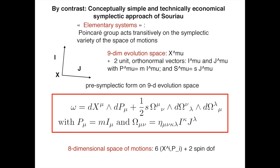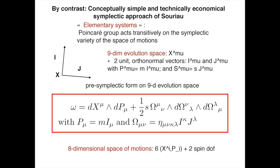It starts, before going to the space of motions, with the evolution space, which includes in the ordinary sense time lines. You have a nine-dimensional evolution space, which is minimal: four spacetime coordinates x, and then at each point in spacetime just two orthonormal vectors — i, which will be a unit vector proportional to the momentum, and j, which will be the direction of the spin vector, the dual of the spin tensor.